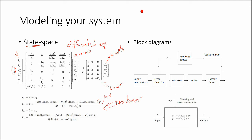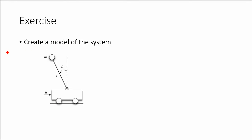An alternative to state-space representation is block diagrams, which are very helpful for encapsulating the complexity of the system. The complexity evident in the state-space equations can be hidden by simplifying the notation and using a more general representation of each component of the system, which could be internally described by a state-space representation. To put this into practice, let's create a model for a system — the inverted pendulum on a cart, which is a very popular problem for controls.